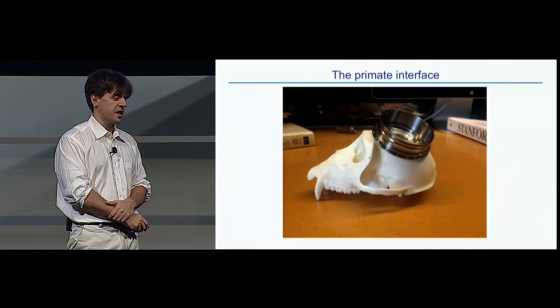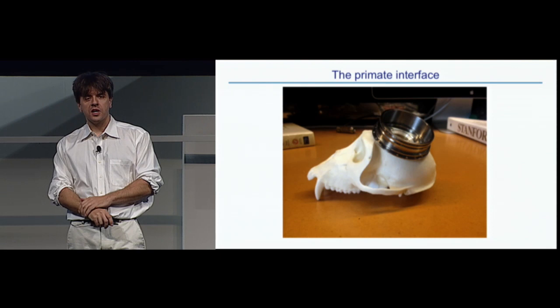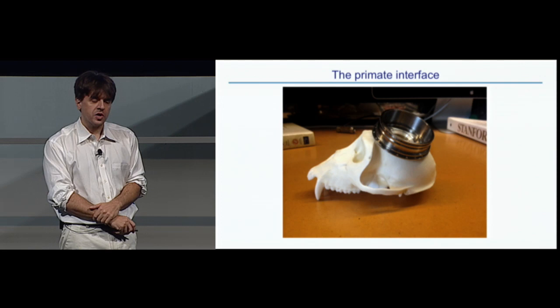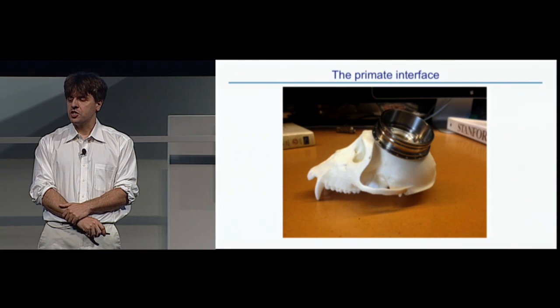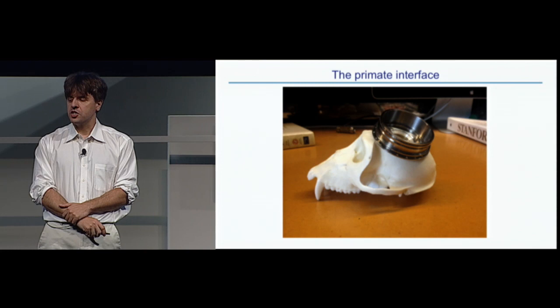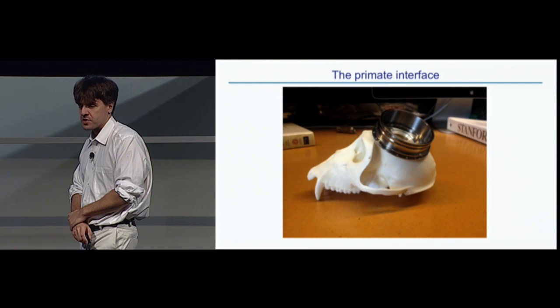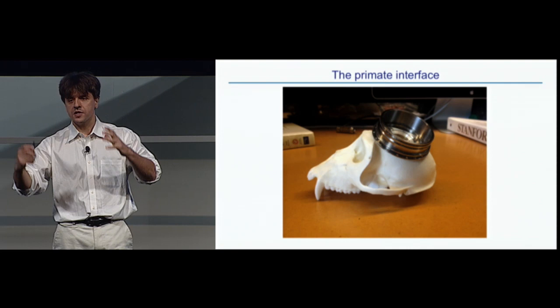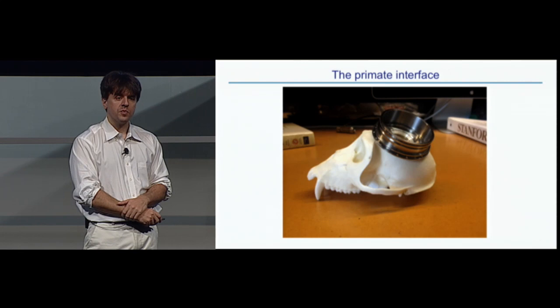Now, this is an image that shows we're not content to stop with the rodents, although we can learn an immense amount. A key part of this program, and we do this in collaboration with Krishna Shanoi at Stanford as we're trying to translate these technologies to the primate, both the non-human, and aspects of these technologies to human brain tissue. This work is, as you might imagine, another step in complexity, but what you see here is an interface that's allowing us to gain this kind of optical access to the behaving monkey brain as well.